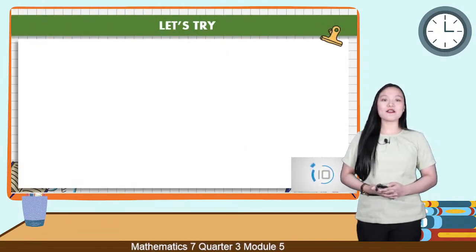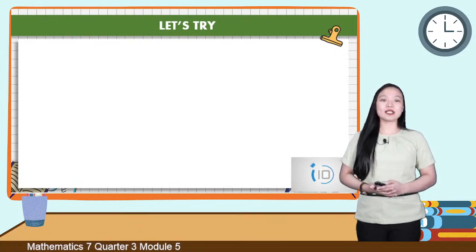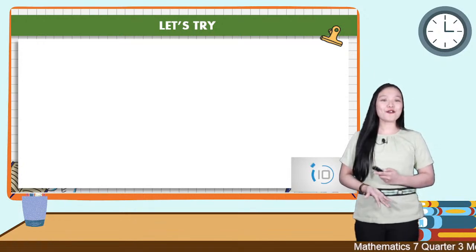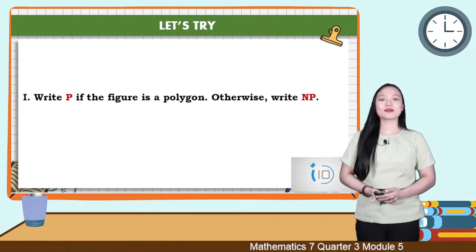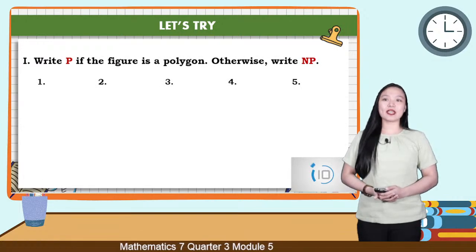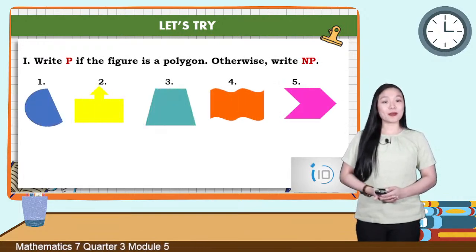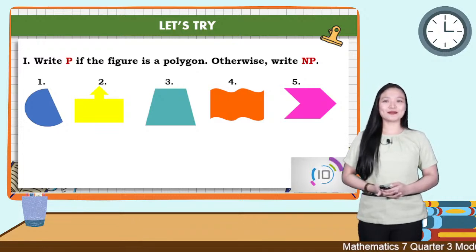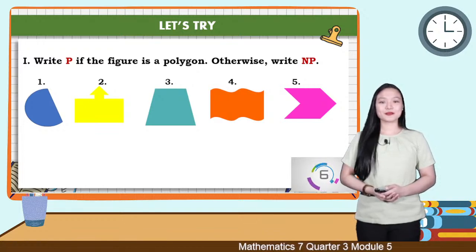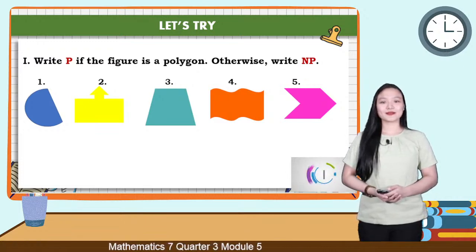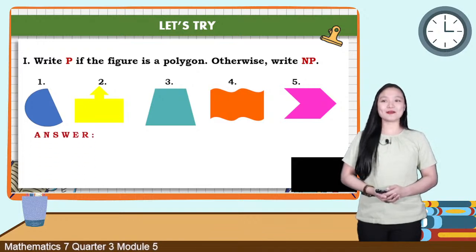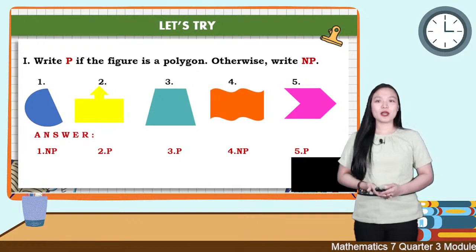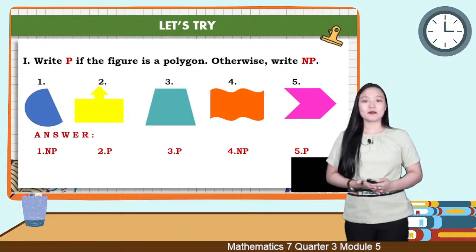There are regular polygons that have special names. A four-sided regular polygon is called a square, and a three-sided regular polygon is called an equilateral triangle. Let's try a practice activity. There are five figures — write P if the figure is a polygon and NP if it is not. You have ten seconds. Time's up. The answers are: number 1 — NP; number 2 — P; number 3 — P; number 4 — NP; number 5 — NP. Did you get it right? Very good.